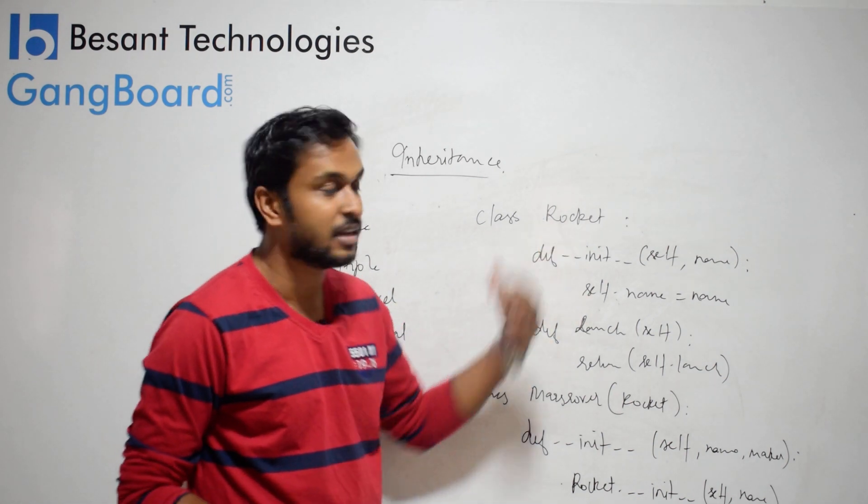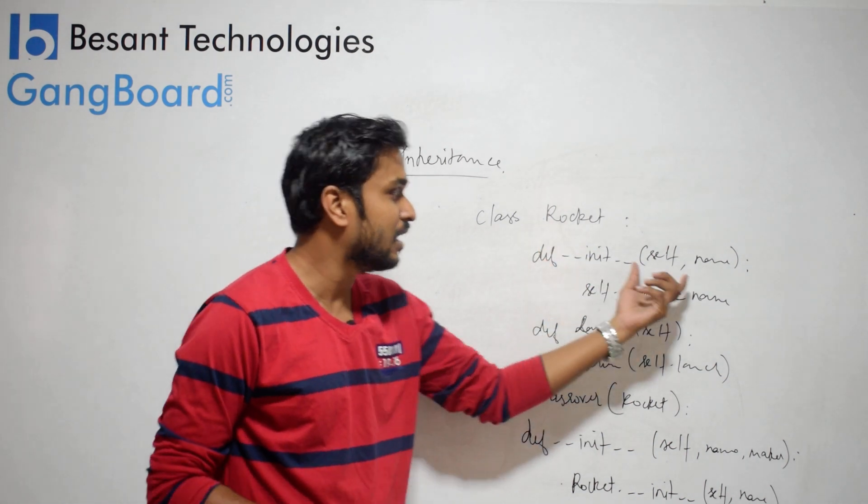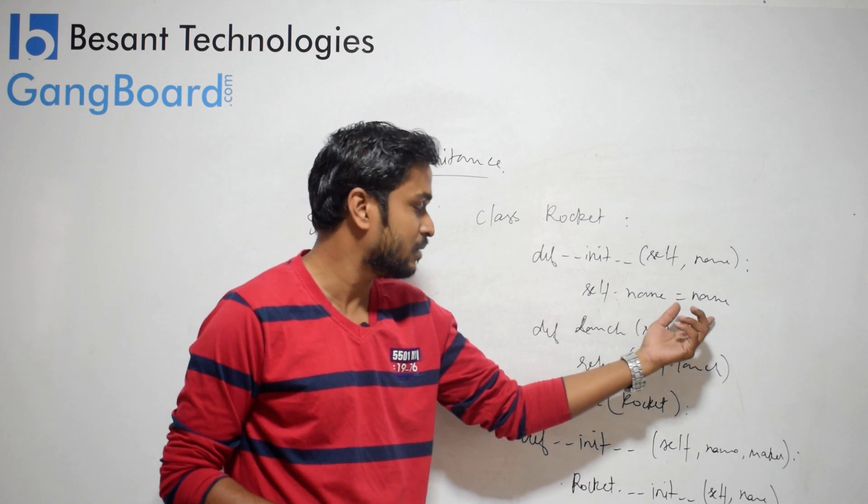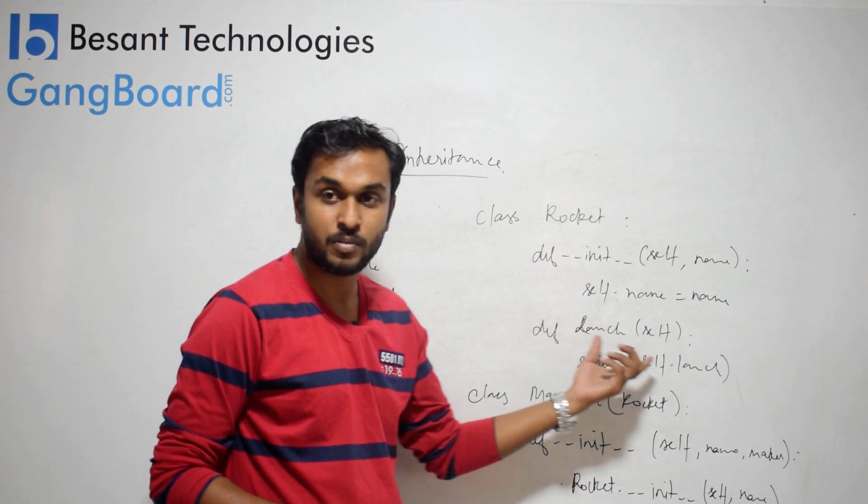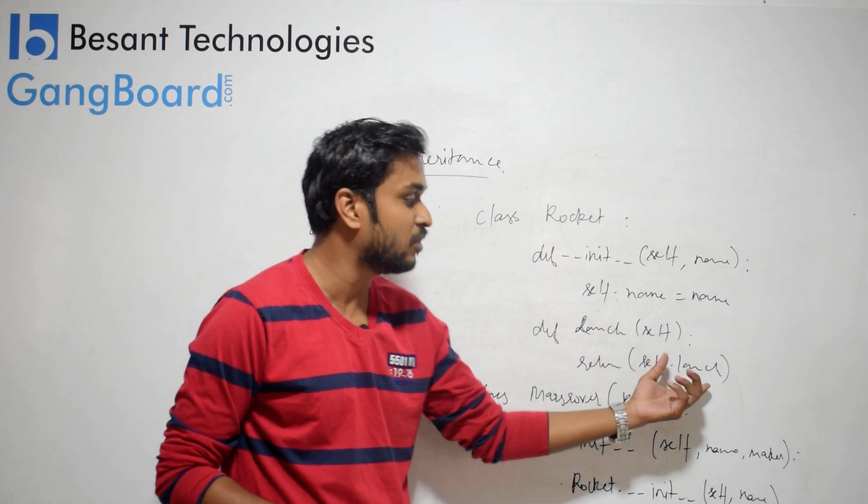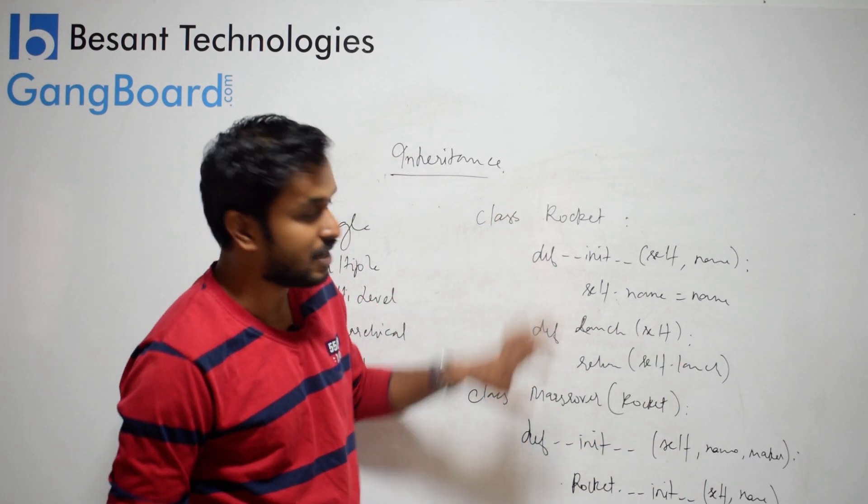First, we will create a class rocket. Def init, self.name. Launch method returns self.name. This is a base class.